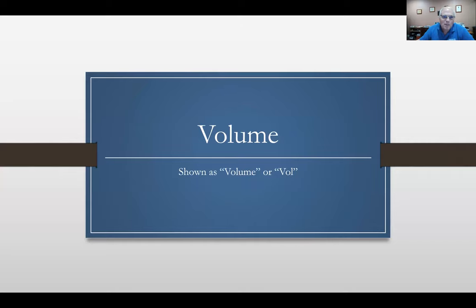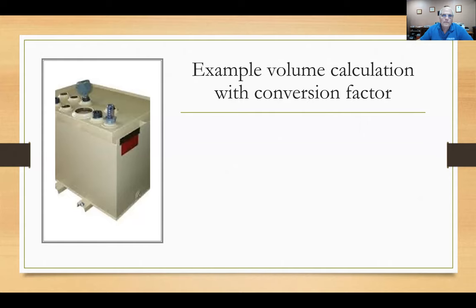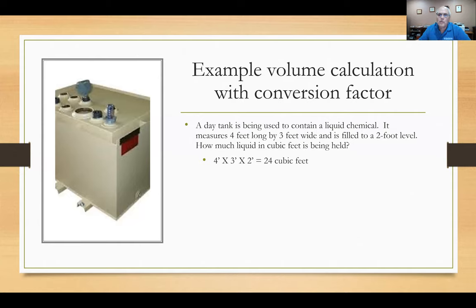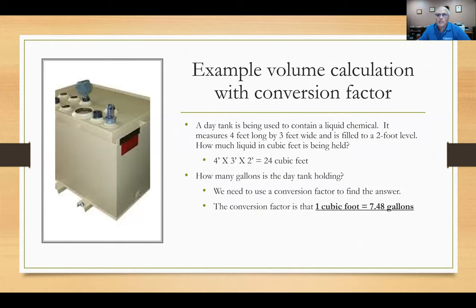Let's look at those eight components, starting with volume. Here's a volume calculation with a conversion factor. You have a day tank — four feet by three feet, filled to the two-foot level. Volume is 4 × 3 × 2 = 24 cubic feet. How many gallons is that? Multiply 24 cubic feet by the conversion factor 7.48 gallons per cubic foot to get 179.52 gallons. So we calculated area, converted to volume, then converted to gallons using the conversion factor.